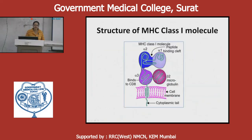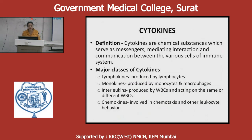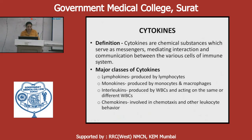Cytokines are polypeptides that serve as messengers mediating interaction and communication between various cells of the immune system. Major classes include lymphokines (produced by lymphocytes), monokines (produced by monocytes), interleukins (produced by WBCs), and chemokines (involved in chemotaxis and other leukocyte behavior). Unlike growth factors which are produced constitutively, cytokines are inducible — produced only after activation of their cells of origin. Cytokines can act in an autocrine manner (on the same cell), paracrine manner (on adjacent cells), or endocrine manner (on cells at a distant site).